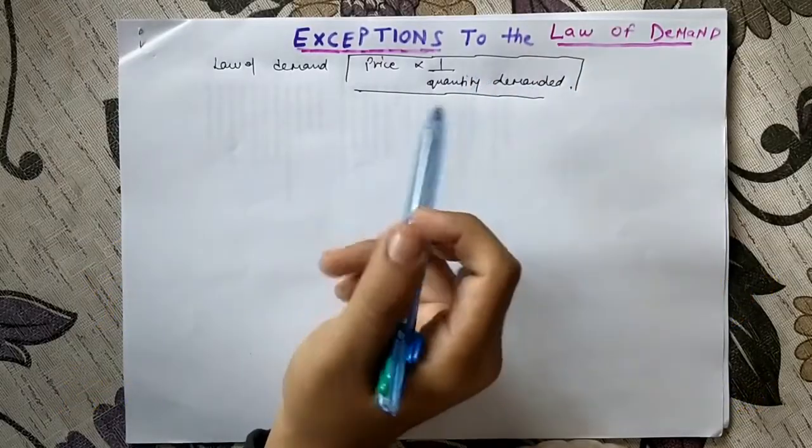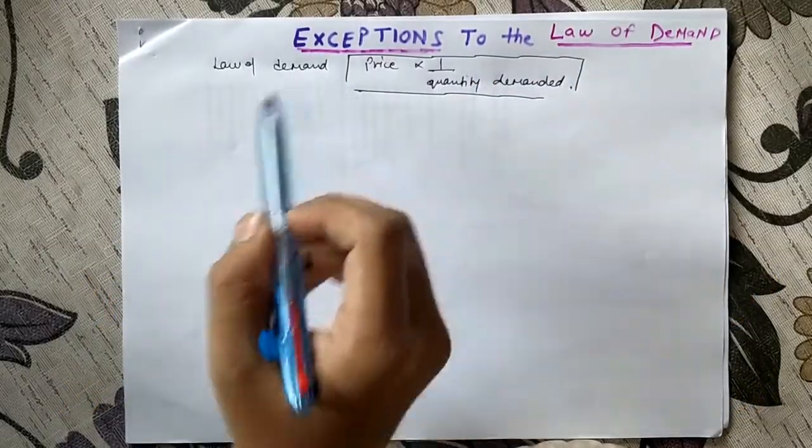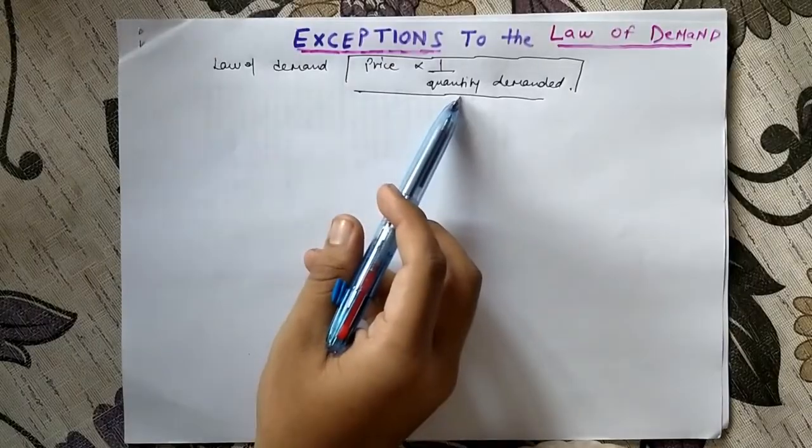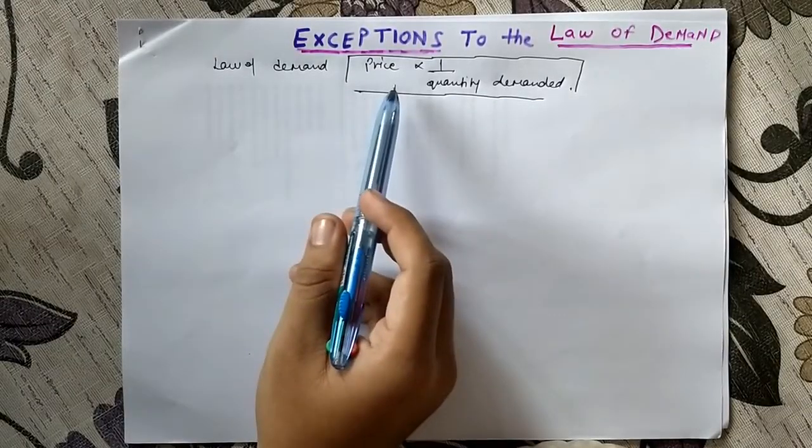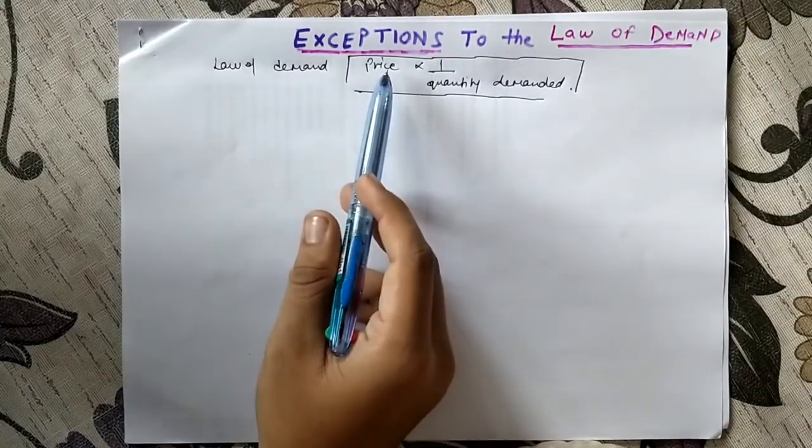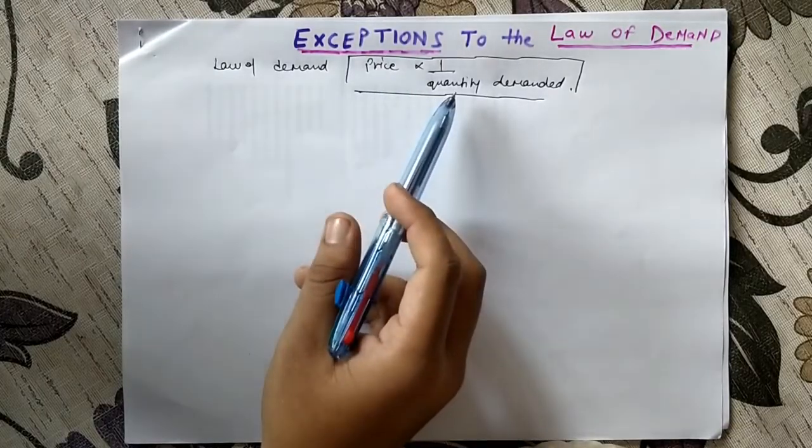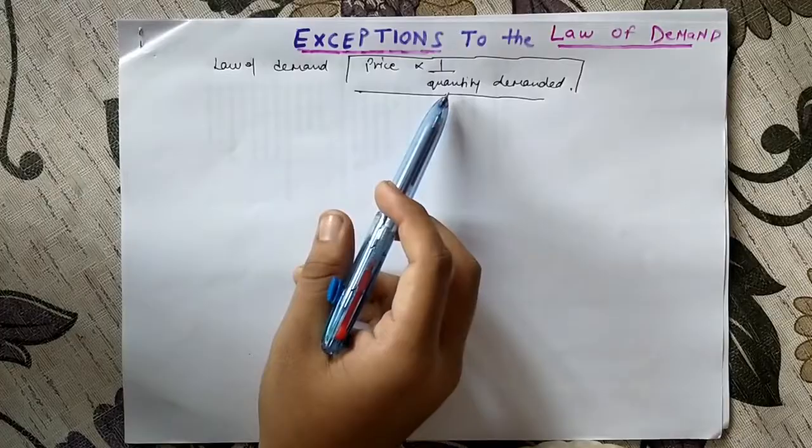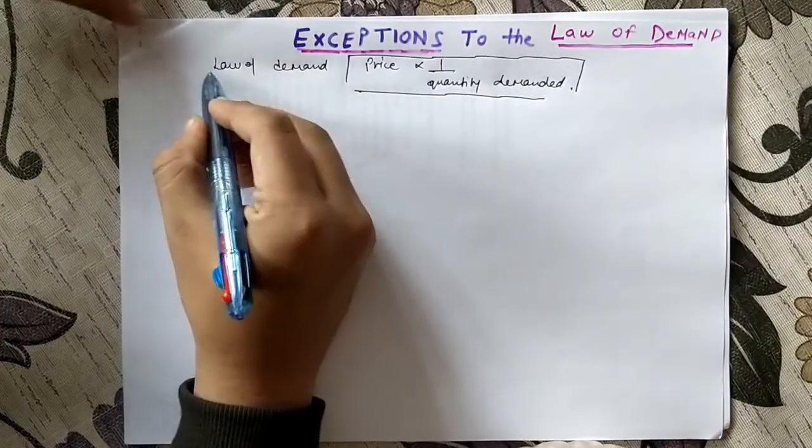We've already discussed in our previous lesson what is law of demand, which says that price is inversely proportional to the quantity demanded. If the price increases, then the quantity demanded will decrease, and if the price decreases, then more people will want that product, so the quantity will increase. This is what we call the law of demand.